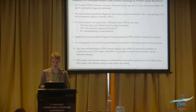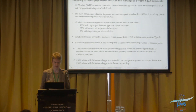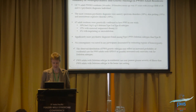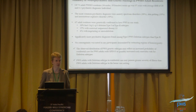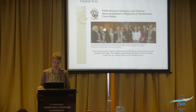In summary: 73 adults, average age 37 years, BMI of 28, averaging 4.2 psychiatric diagnoses. Most common diagnoses were anxiety spectrum, skin picking, and intermittent explosive disorder. 50% had deletion, 37% UPD, 4% imprinting. Type 1 had significantly more psychiatric diagnoses than Type 2. No consanguinity was found. The observed distribution of genetic subtypes likely reflects an increased probability of residential care for UPD individuals, and adults with deletion subtype in residential care likely have more severe psychiatric illness than those in home care. Thank you to all the staff at PWS Homes of Wisconsin.